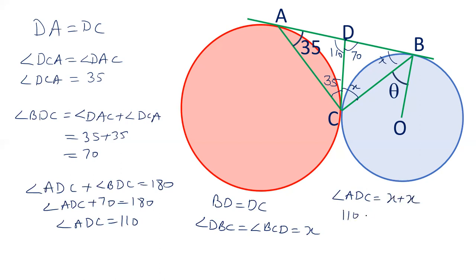Angle ADC is equal to X plus X, and since angle ADC is 110 degrees, the value of angle X is 55 degrees. Therefore, angle DBC is 55 degrees.